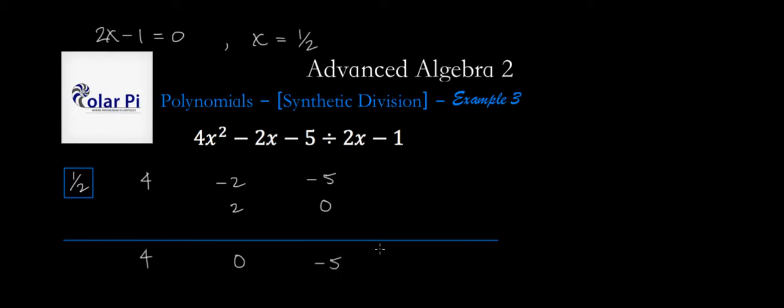Which means that our answer is 4x plus 0 with a remainder of negative 5. But remember, from what I said in example 2, this means that we write our answer to the original problem.